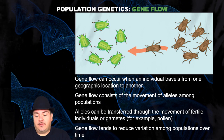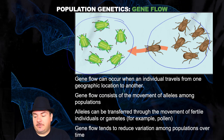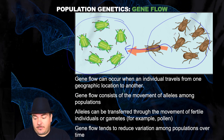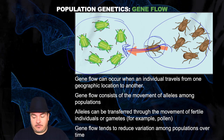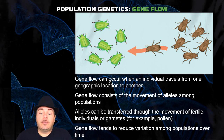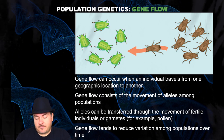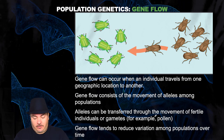The next example is gene flow. That's where you have two separate populations — a population of green beetles and a population of brown beetles. One of these brown beetles happens to travel to a different location where the green beetles are, so those alleles — the genes — are flowing from one location to the other. You're now getting that brown allele in the new location where it wasn't before. Gene flow can occur when an individual travels from one geographic location to another. Gene flow consists of the movement of alleles among populations. Alleles may transfer through the movement of fertile individuals or gametes, like pollen through the air. Gene flow tends to reduce variation among populations over time.